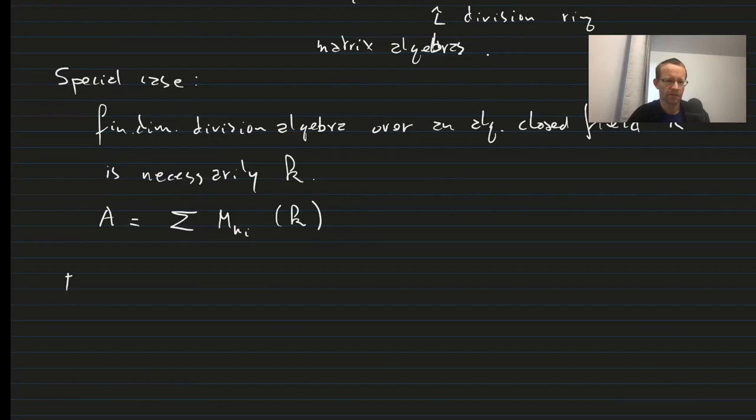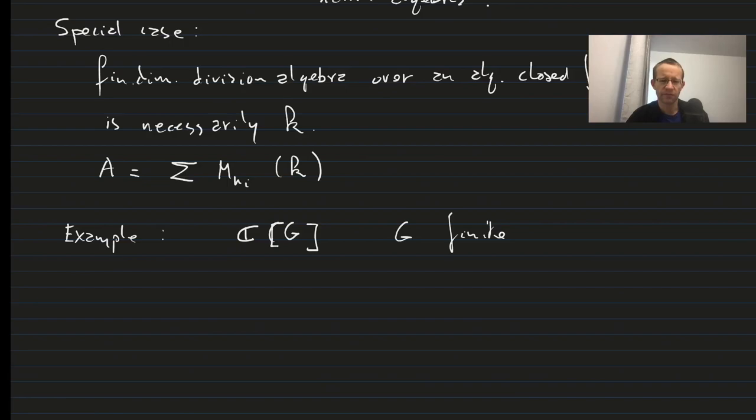An example of this is the group algebra of a finite group. So we take all elements of a finite group, give them complex coefficients, and form the straightforward algebra. In that case we can use this theorem to show that it is a product of matrix algebras. But in fact, this product consists of a number of factors which is equal to the number of irreducible representations of the finite group, which is equal to the number of conjugacy classes, matrix algebras of dimensions which happen to be the dimension of the irreducible representations of the group over our algebraically closed field. So that's an application of the Wedderburn-Artin theorem for semi-simple algebras.